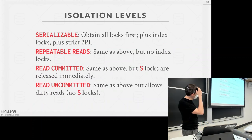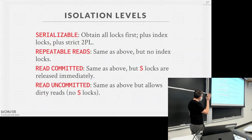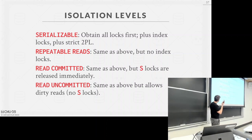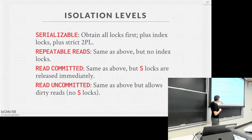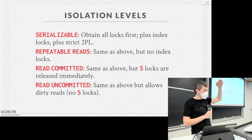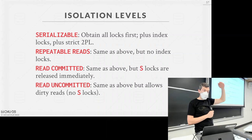The implementation: for Serializable, you use strict 2PL plus index locks, acquiring locks first. Repeatable Reads is the same but without index locks. Read Committed releases shared locks immediately after reading, rather than holding them — that violates 2PL but is acceptable at this lower isolation level. Project 4 will specify exactly what the protocol is for acquiring and releasing locks at each isolation level.